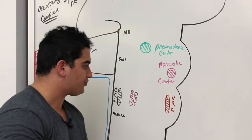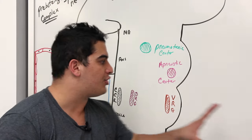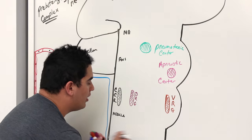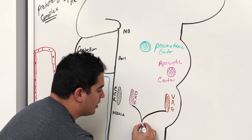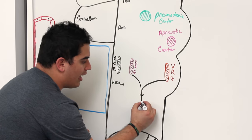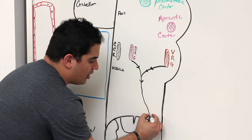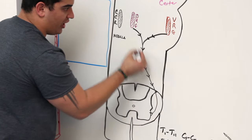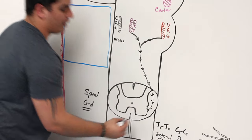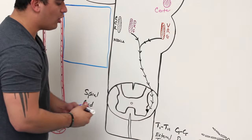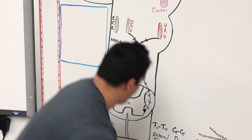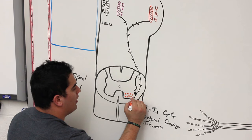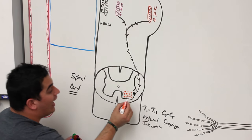Now let's see how certain changes can influence these centers and how they send their signals. The VRG and DRG both have inspiratory neurons that move downward, sending fibers all the way down into the ventral gray horn of the spinal cord — signals coming from both the VRG and DRG, the inspiratory centers in the medulla, onto the cell bodies of somatic motor neurons located within the anterior or ventral gray horn.